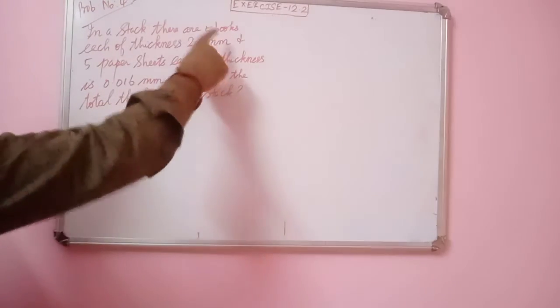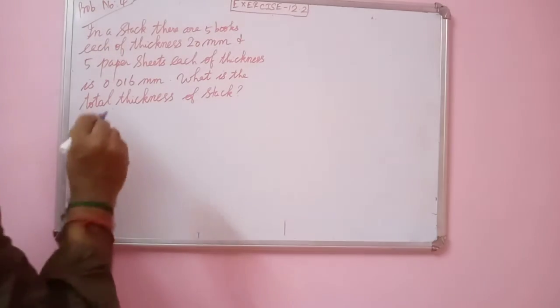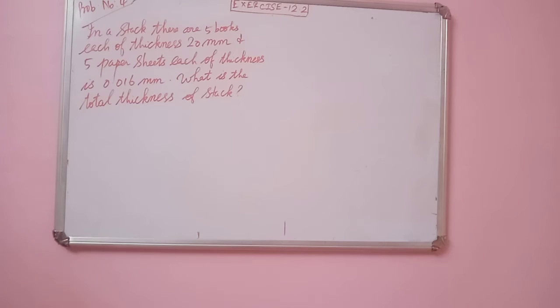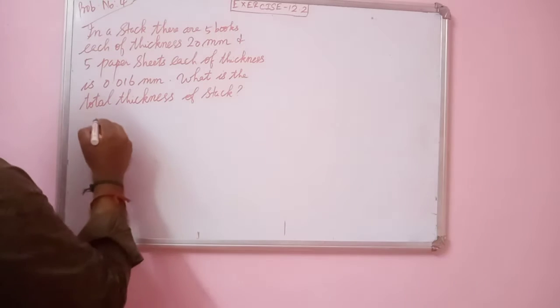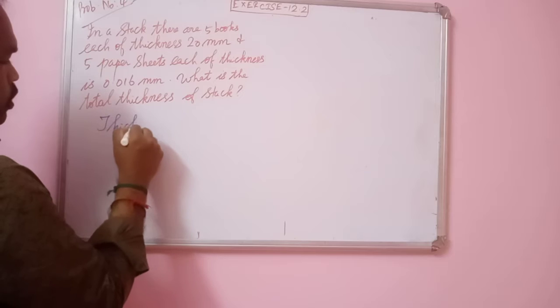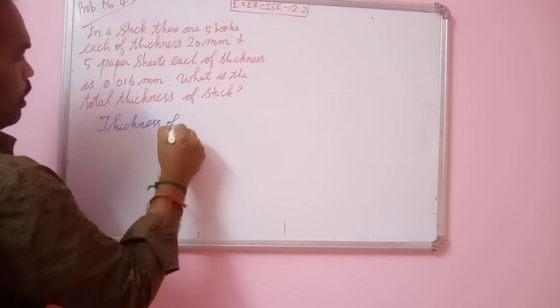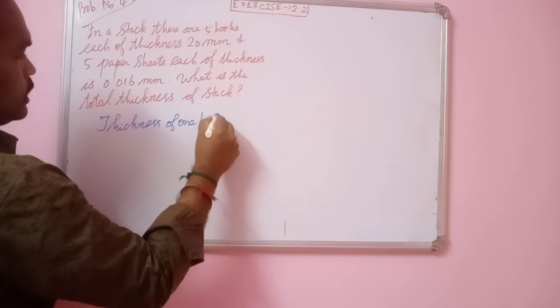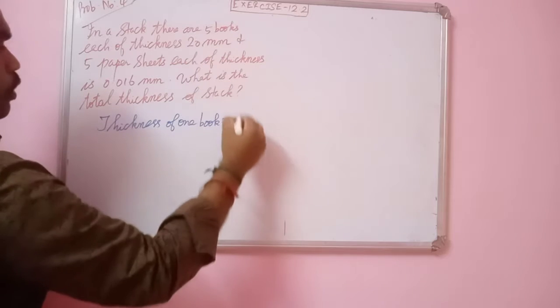So, in a stack, there are 5 books. Each book, that is, thickness of each book. Thickness of 1 book is how much? 20 mm.